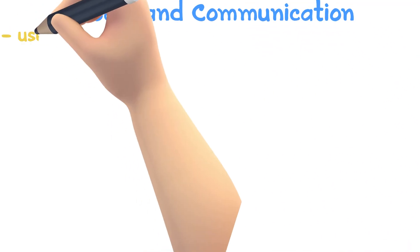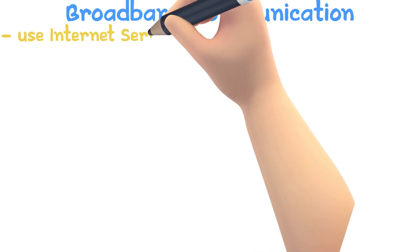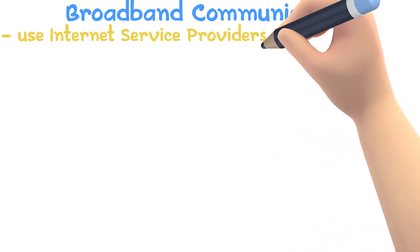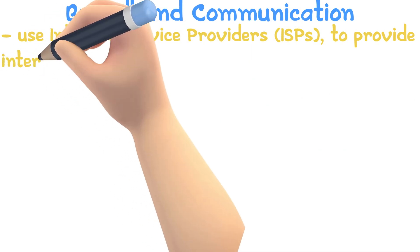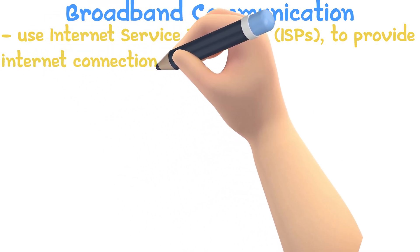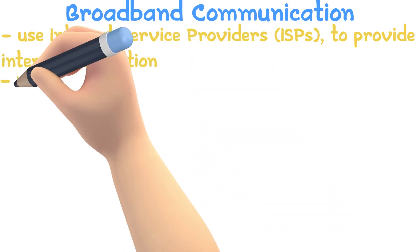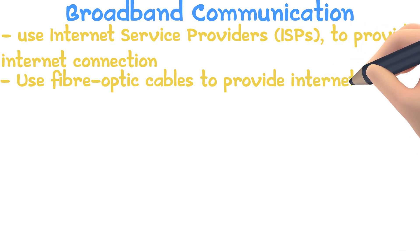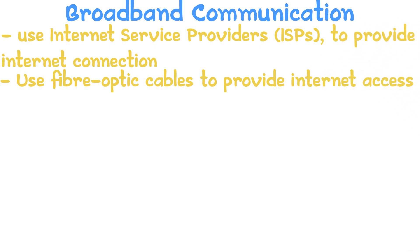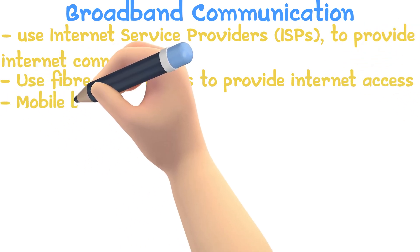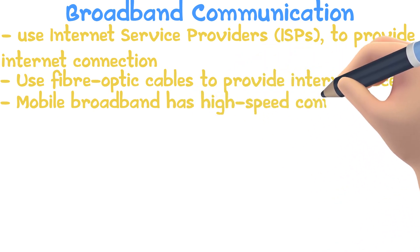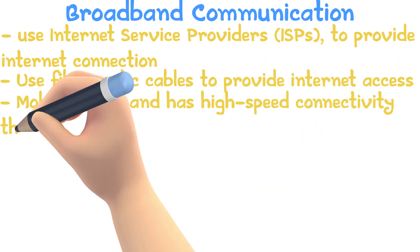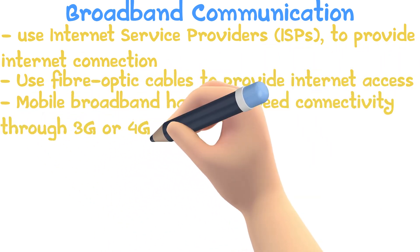Broadband Connections use ISPs — internet service providers — to provide fast access to the internet. ISPs use fiber optic cables to provide internet access. Mobile Broadband has high-speed connectivity through 3G and 4G networks.